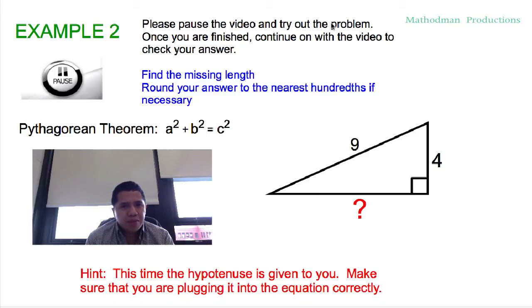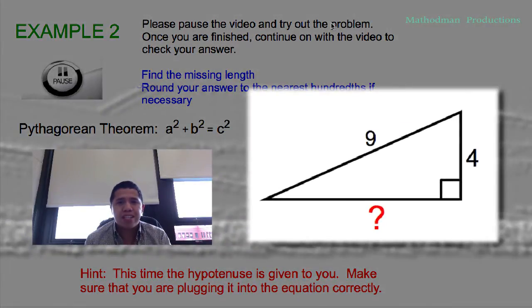Alright, this problem, for example two, is a little different. Just read the little hint right below. The hypotenuse is given to you, so one of the legs are missing. Think about it when you plug in the information to the Pythagorean theorem.